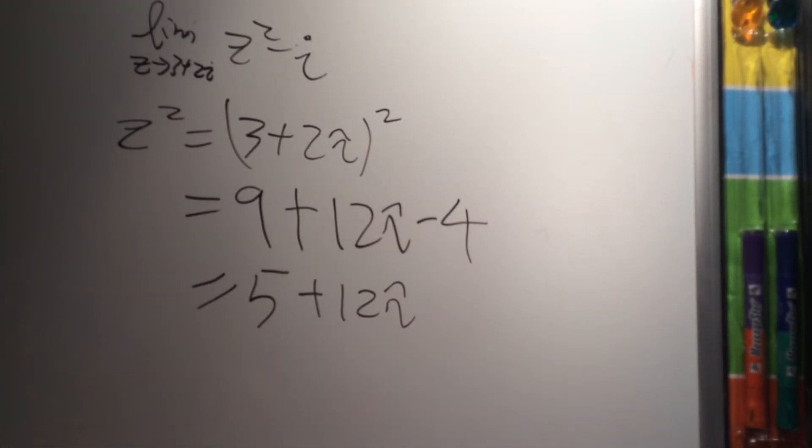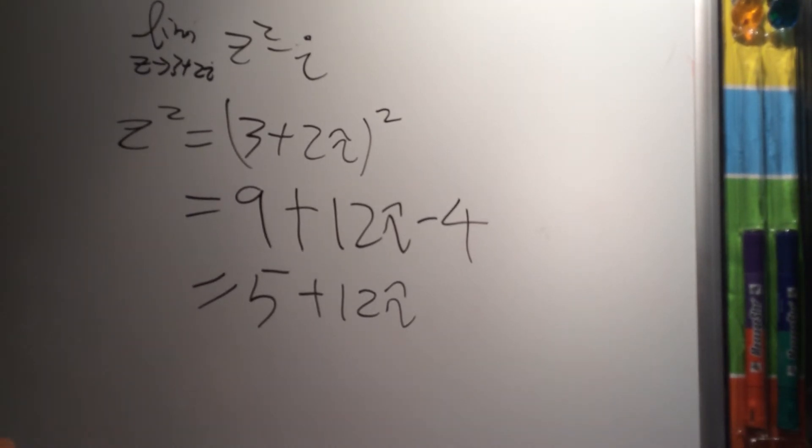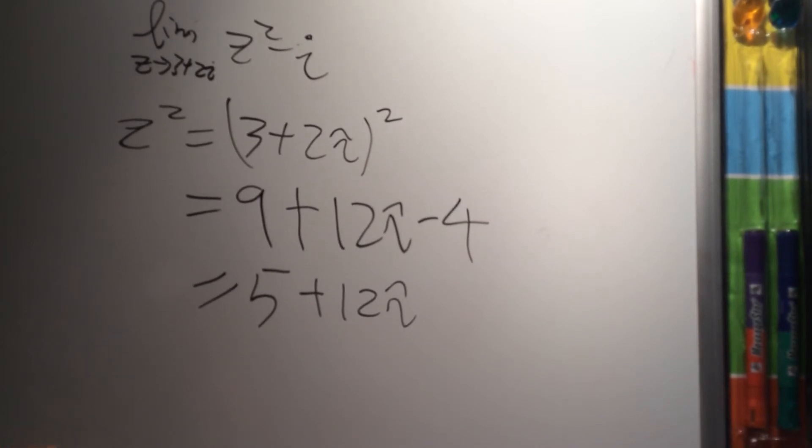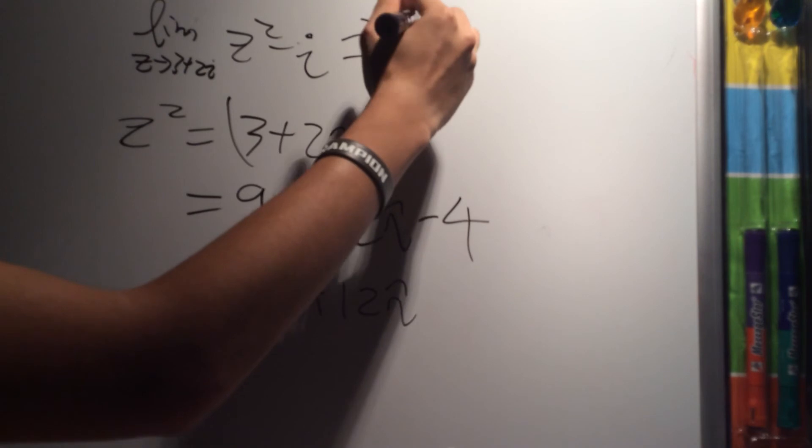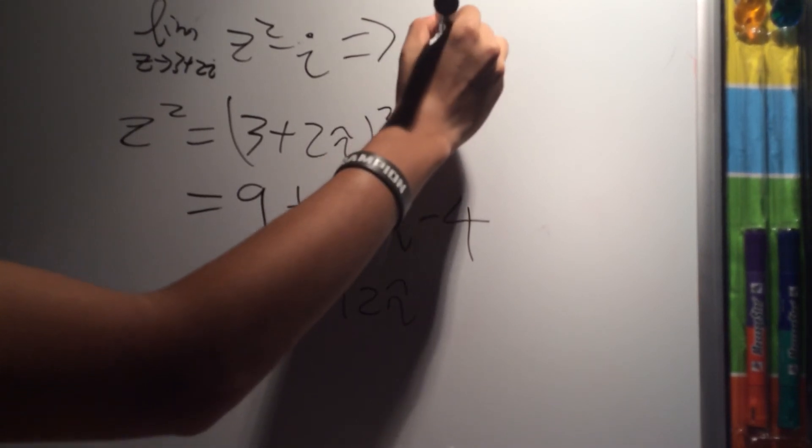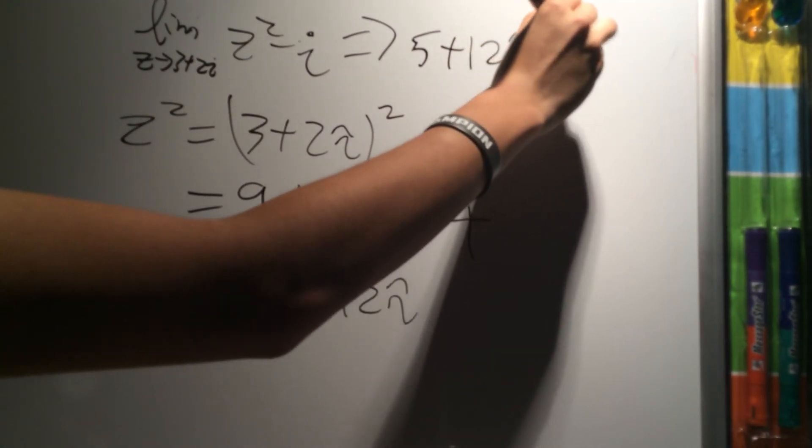Now, let's look at the imaginary part, which is just minus i, and since that is not affected by our z, we can rewrite this limit as 5 plus 12i minus i, which is equal to 5 plus 11i.